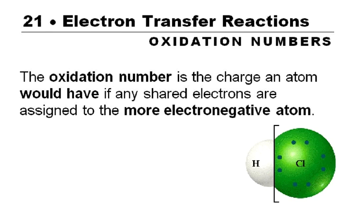For chapter 21, where we're talking about electrons being transferred, the idea of the oxidation number comes back. We saw this a long time ago in chapter 5, and now we're going to come back and look at this again — partially to remind ourselves about how to do oxidation numbers, and partially to look at them in a more sophisticated way.